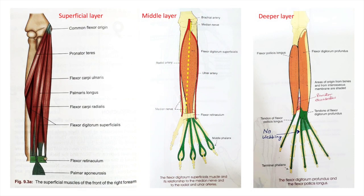The muscles of the front of the forearm are divided into three layers: superficial layer, middle layer, and deeper layer. In the superficial layer you have pronator teres, flexor carpi radialis, palmaris longus, and flexor carpi ulnaris. Out of these, only flexor carpi ulnaris is innervated by the ulnar nerve; the rest are innervated by the median nerve.